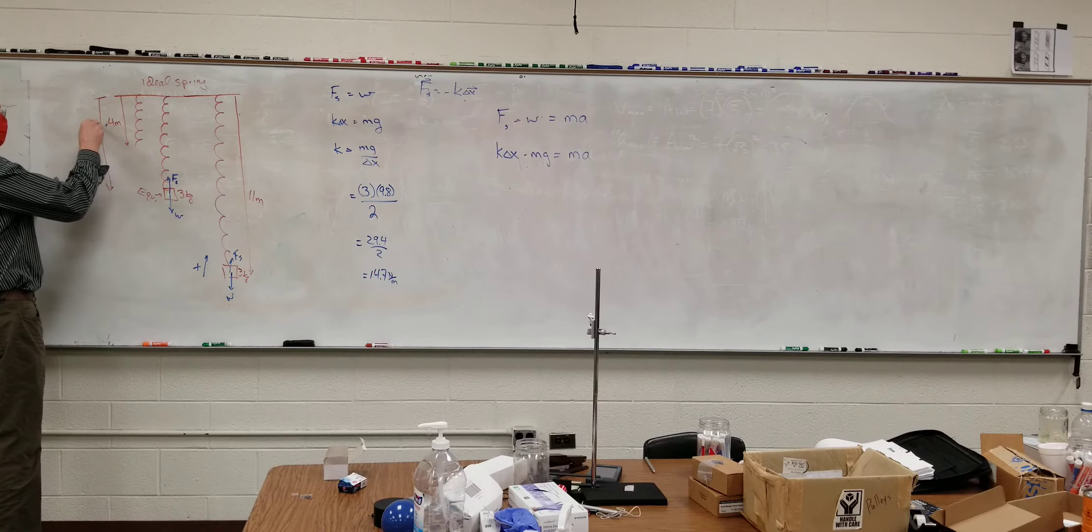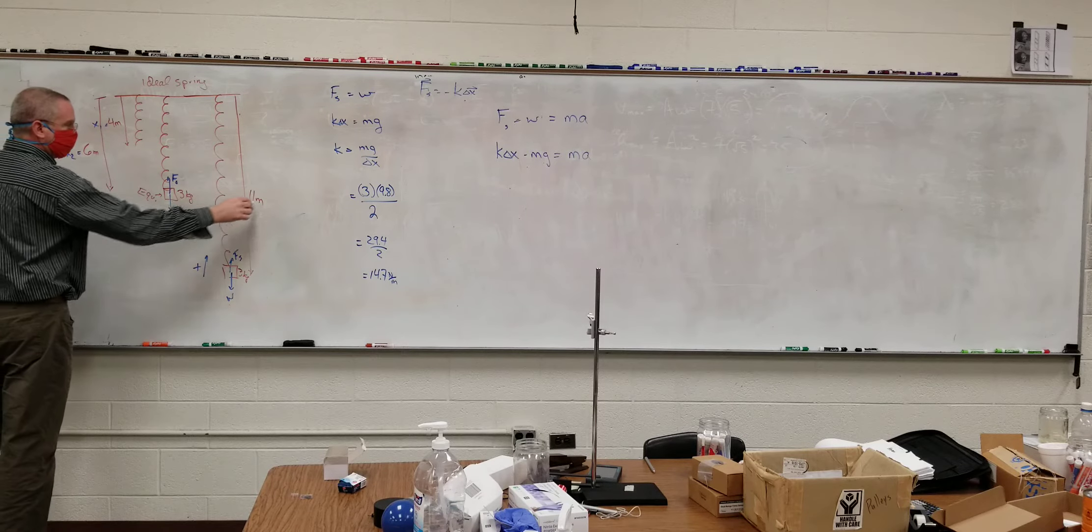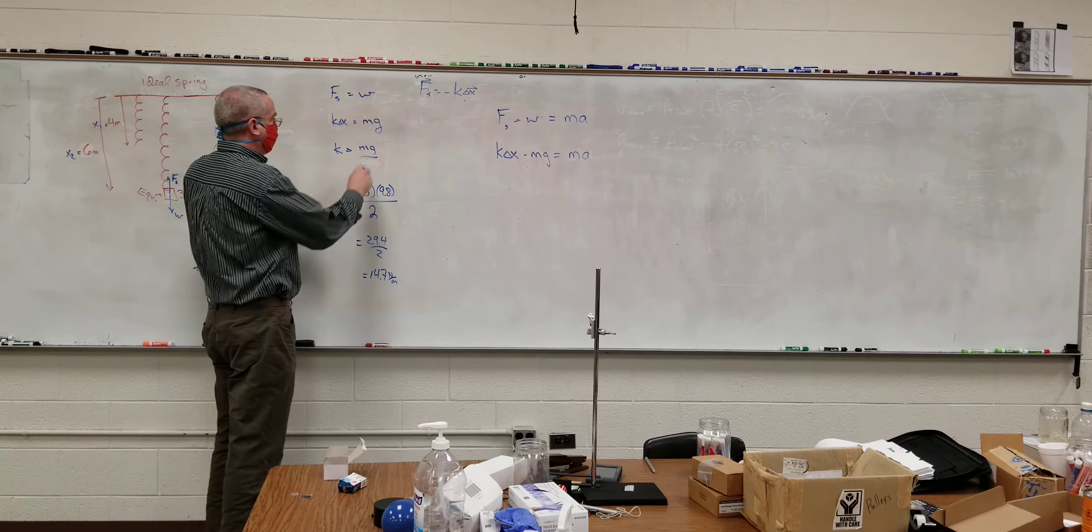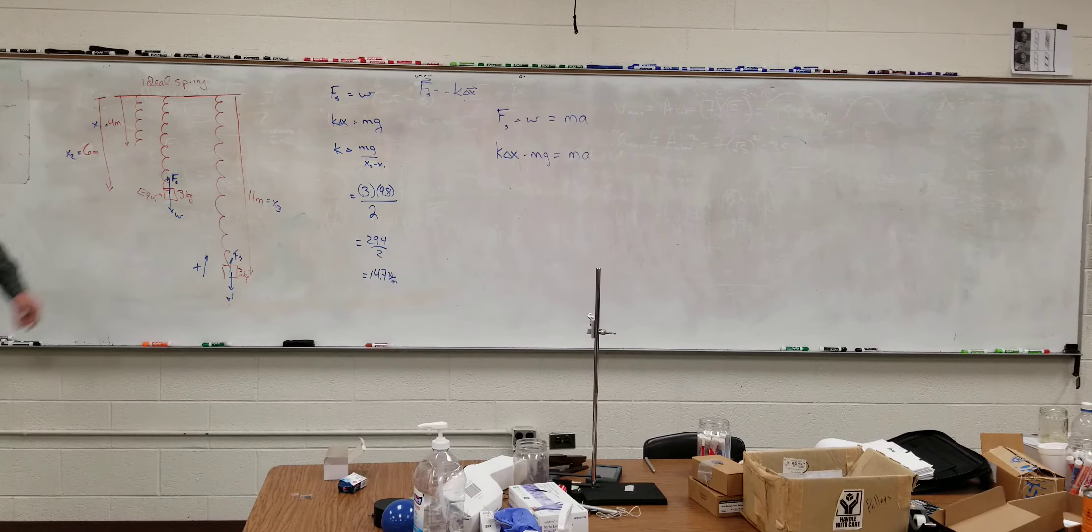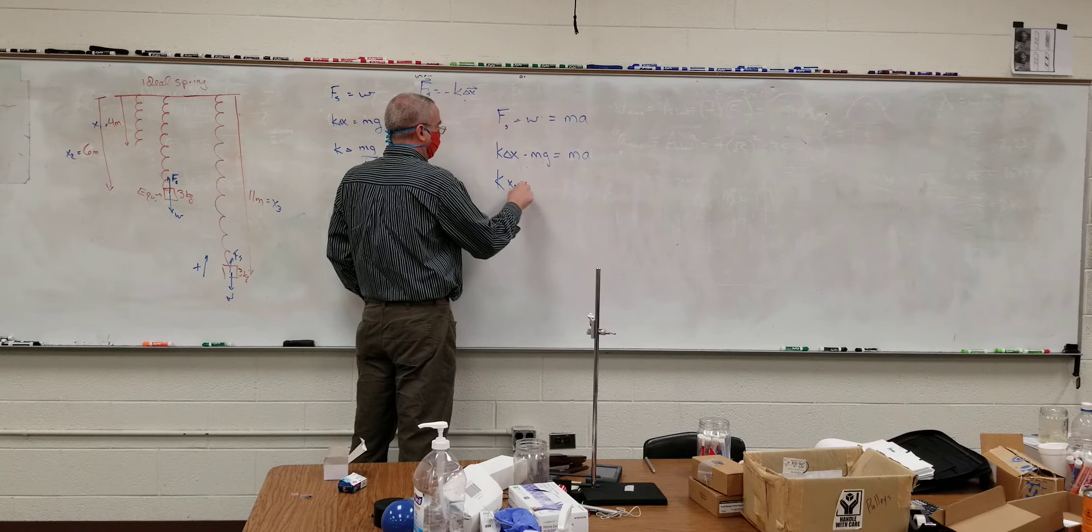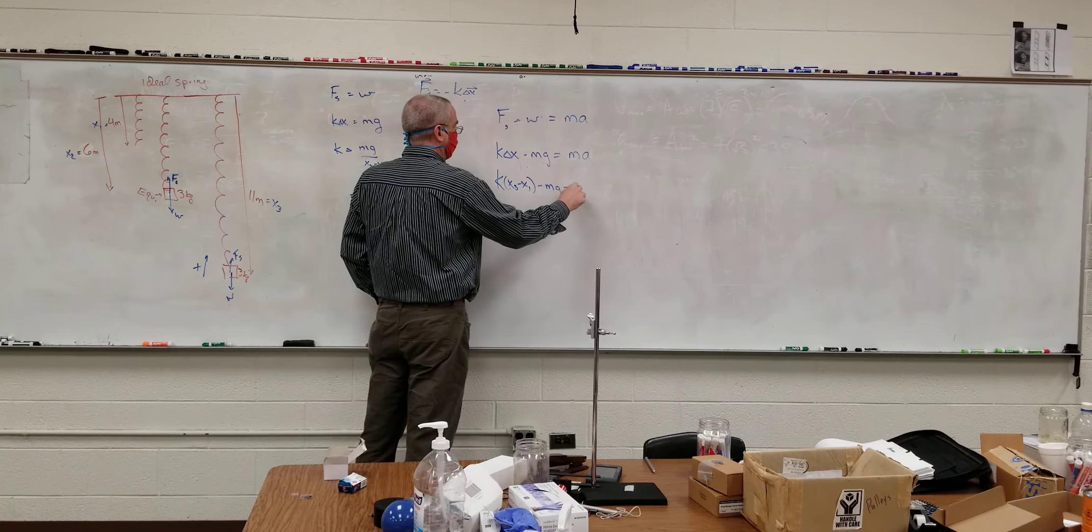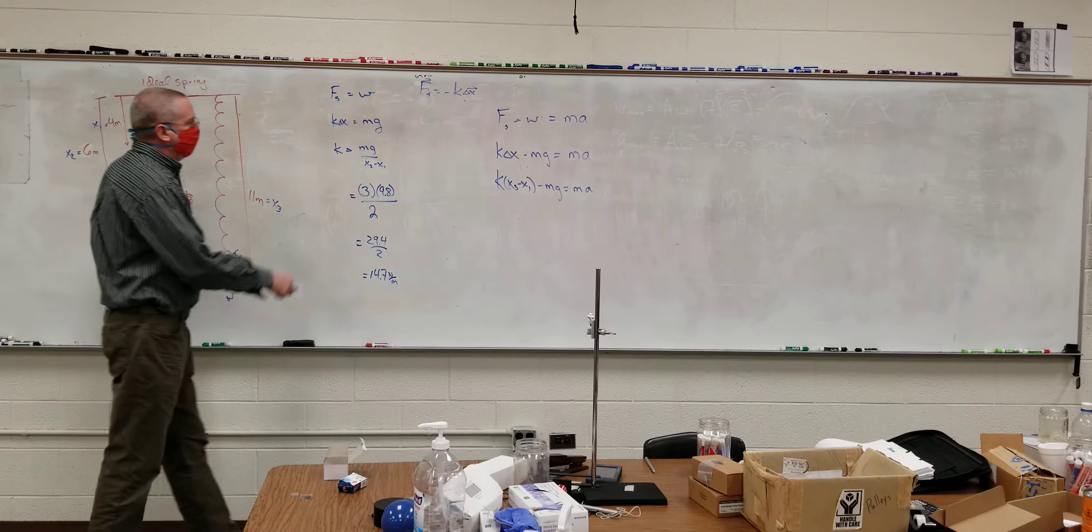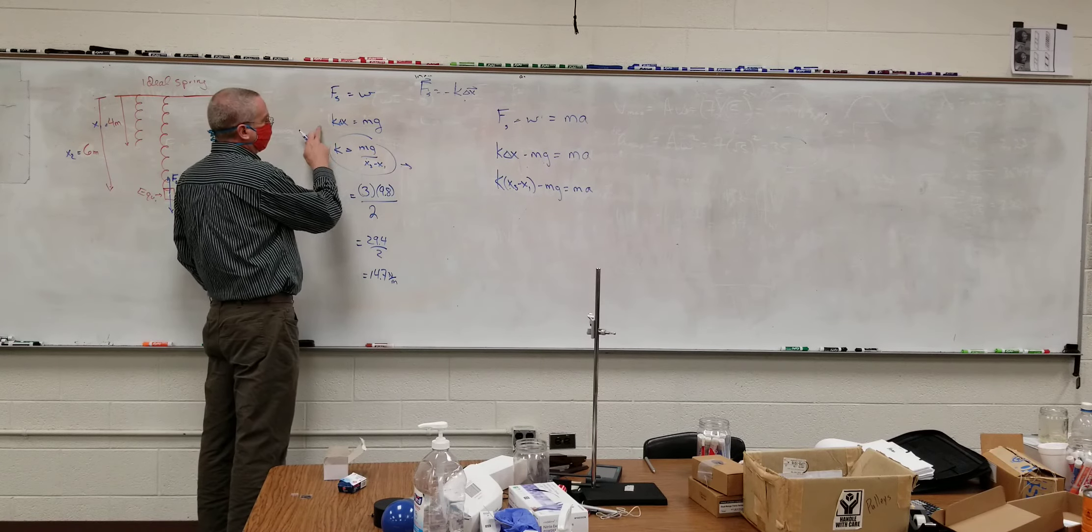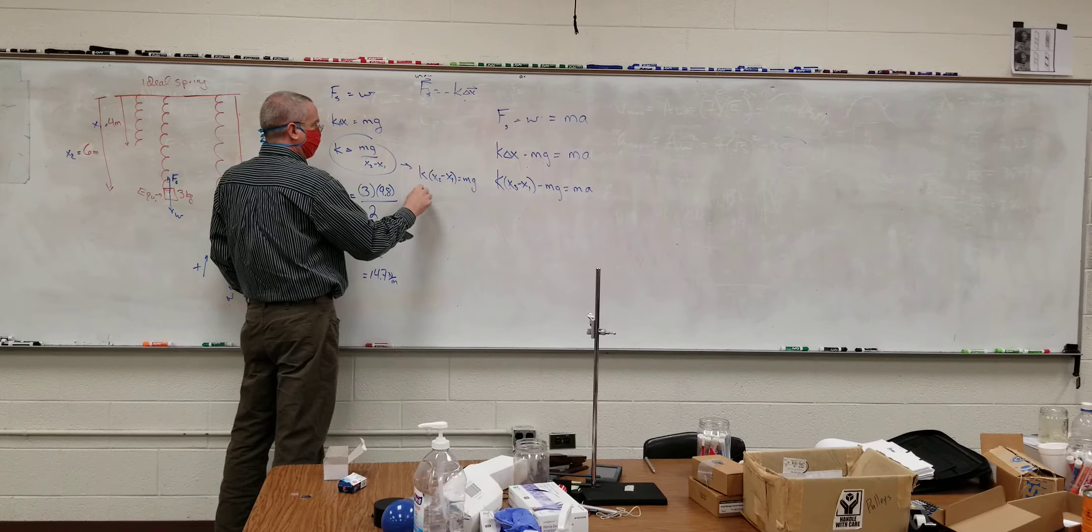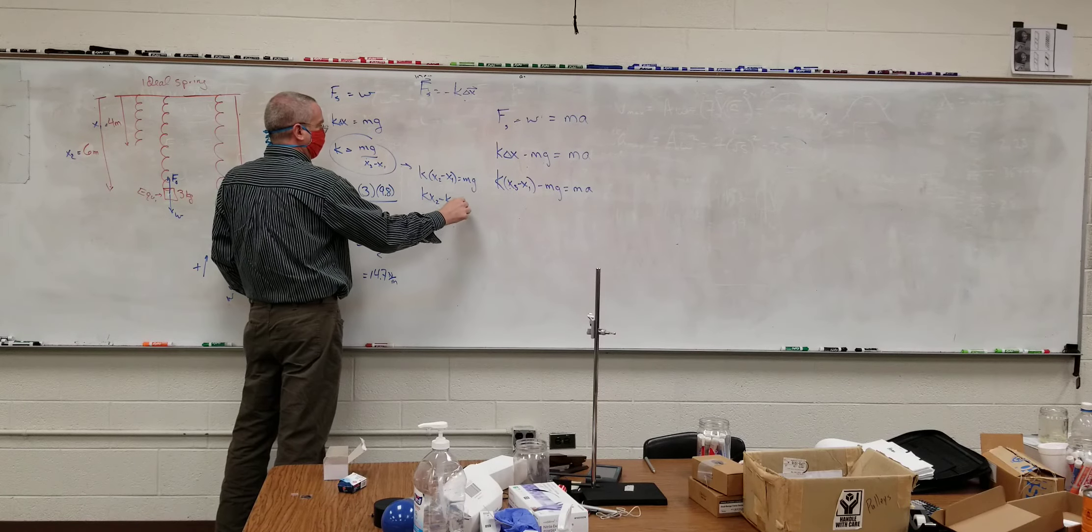Now, recognize this delta x here is to this position right here. So I'm just going to call this x1, call this x2, and call this x3, because they are three different lengths. This delta x here is x2 minus x1. The delta x over here is x3 minus x1. So this becomes Kx3 minus x1 minus mg equals ma. If we play around with this a little bit, or basically going back to there, however you want to look at it, that's Kx2 minus x1 equals mg. In other words, Kx2 minus kx1 equals mg.